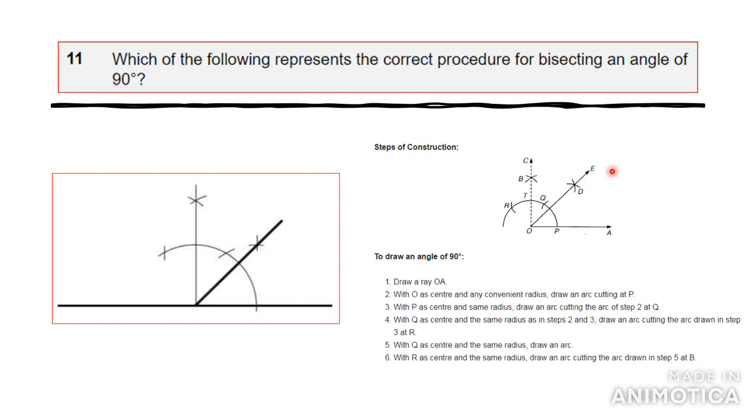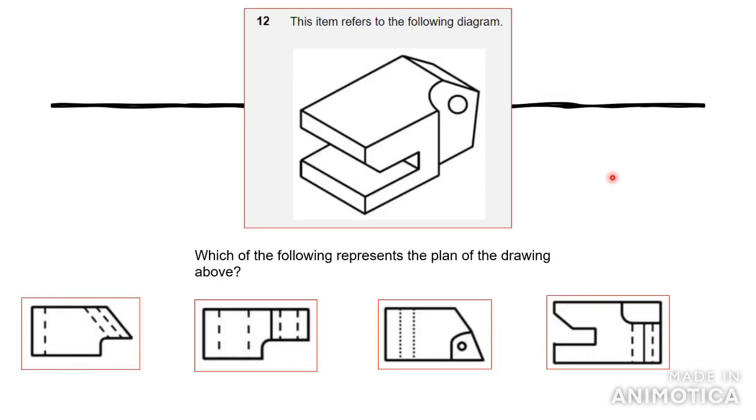Once you have the 90-degree angle, you bisect it into 45 degrees. The procedure is shown below, and if you want to do it on paper you can follow that method as well.